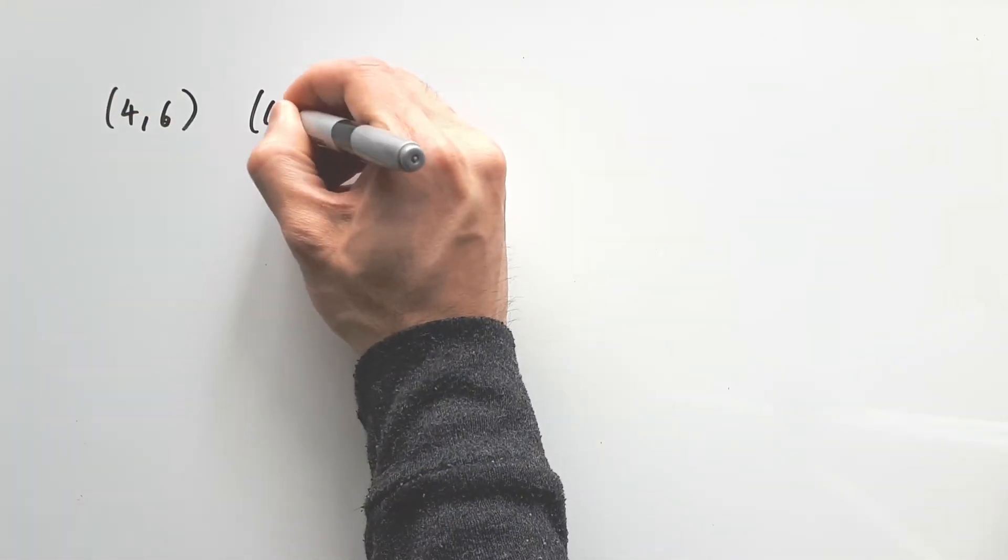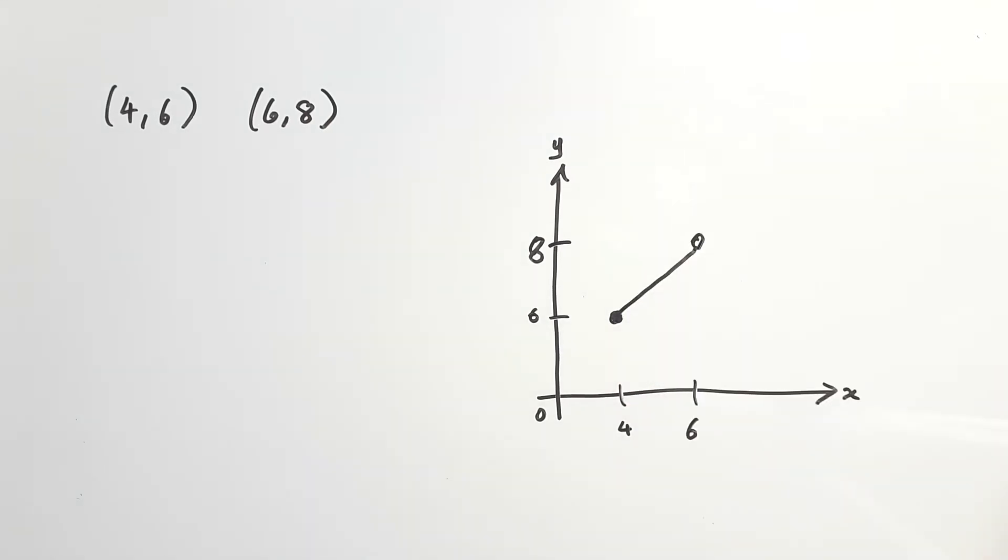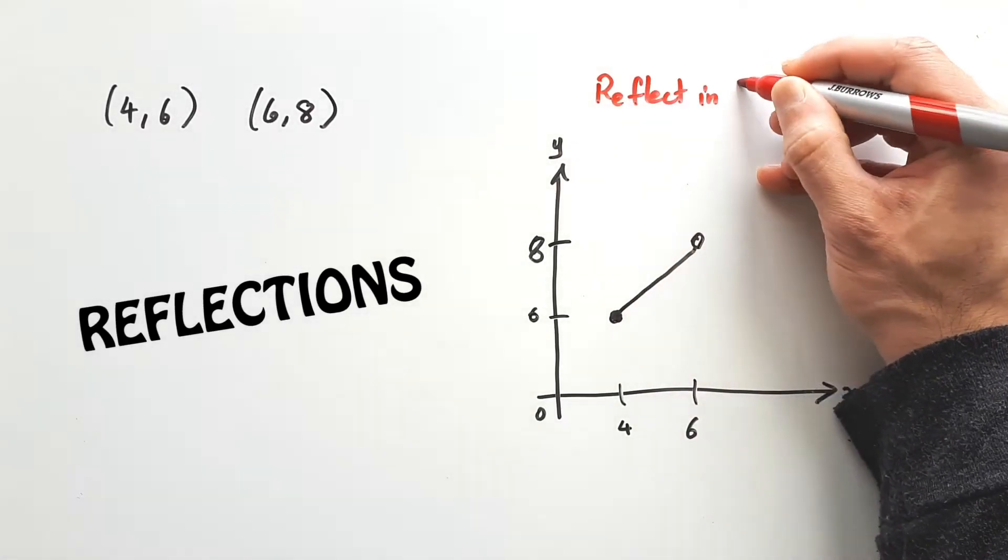In the previous video, we saw how dilations stretched a line made by two points, 4,6 and 6,8. But what happens if we reflected the line instead, like reflecting in the y-axis?